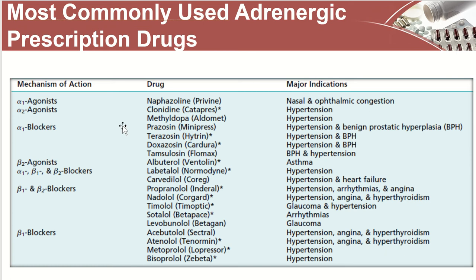These are some common prescription drugs. For albuterol, also known as Ventolin, the major indication is asthma, and the mechanism of action is a beta-2 agonist. For atenolol, it has a different mechanism of action — it's a beta-1 blocker — and the major indication is hypertension, among other things. One thing we can observe from this table is that a lot of the major indications involve hypertension, even though the mechanism of action varies.